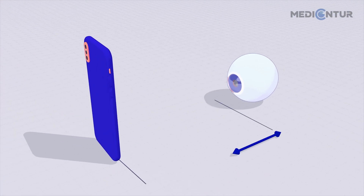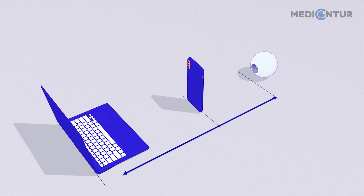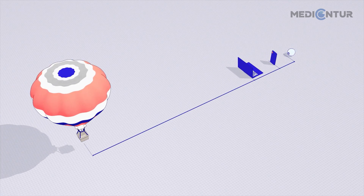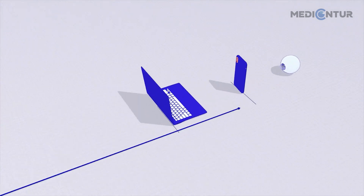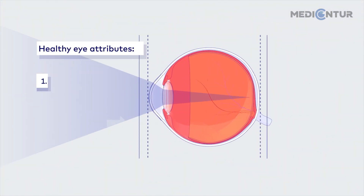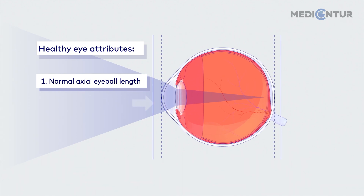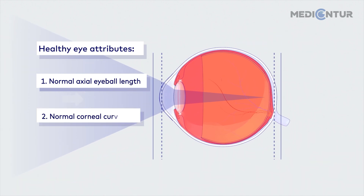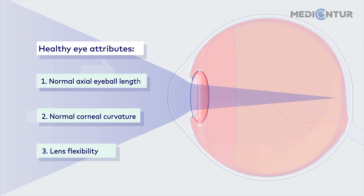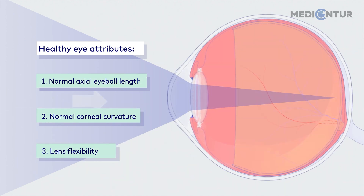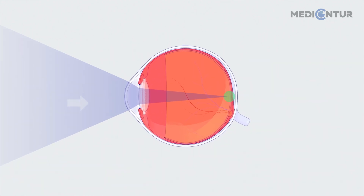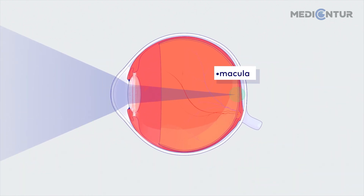Light enters our eyes from three main distances – close up, intermediate and far. To see clearly at all of them, a healthy eye requires ideal eyeball length, a correct curvature of the cornea, and the elastic ability of the crystalline lens. Their interplay enables light to be accurately focused onto the retina's most sensitive point – the macula.